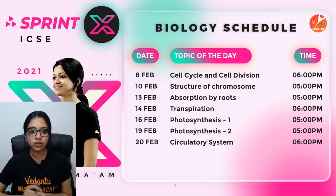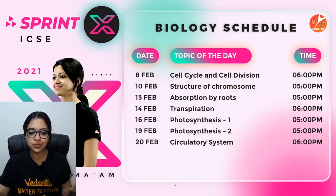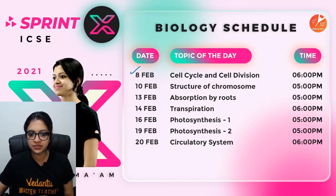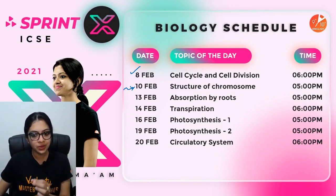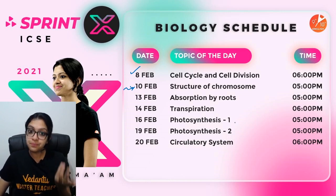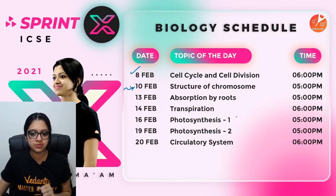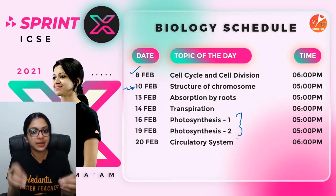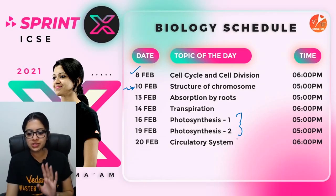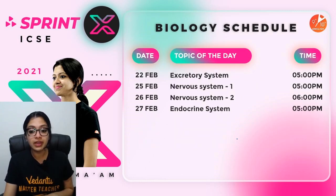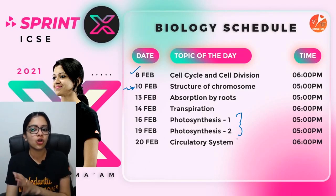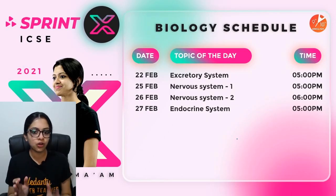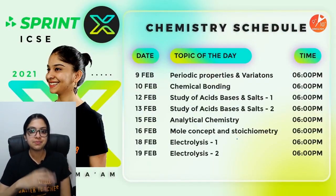Here is the biology schedule for Sprint X. We are already done with the first one — Cell Cycle and Cell Division. Structure of Chromosome is what is happening today. All your other chapters are yet to be done, and depending on the importance or complexity of a chapter we have kept the number of sessions to one or two. For example, photosynthesis has two sessions, nervous system also has two sessions. The timing will be 5 PM or 6 PM every day for biology, and the last session will be on the 27th of February.